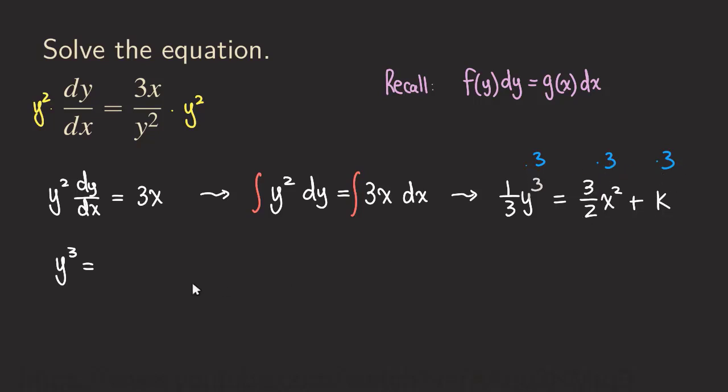What do we get here? 9/2. So we get 9/2 x² plus, and the k times 3 gives us 3k. And we're almost done.